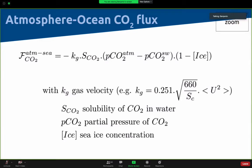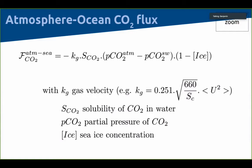Let's go through some equations to dig a bit more into the details. The atmosphere-to-ocean CO₂ flux is the product of a gas transfer velocity, the solubility of CO₂ in water, and the difference in pCO₂ between the atmosphere and the ocean, multiplied by the term (1 − ice concentration) to account for ice cover. The gas velocity can depend on quadratic wind speed or even wave slope — the derivation I'll be doing later is still robust regardless.